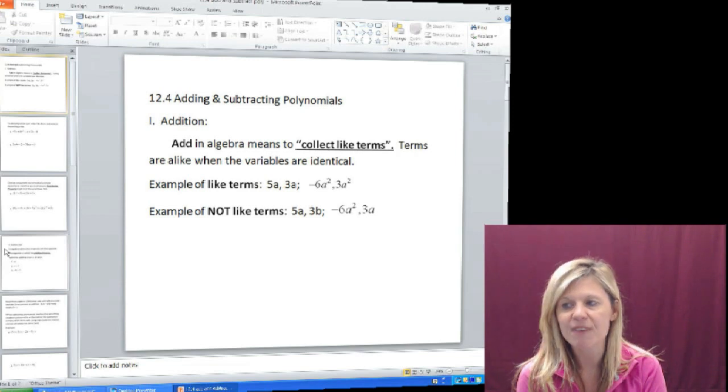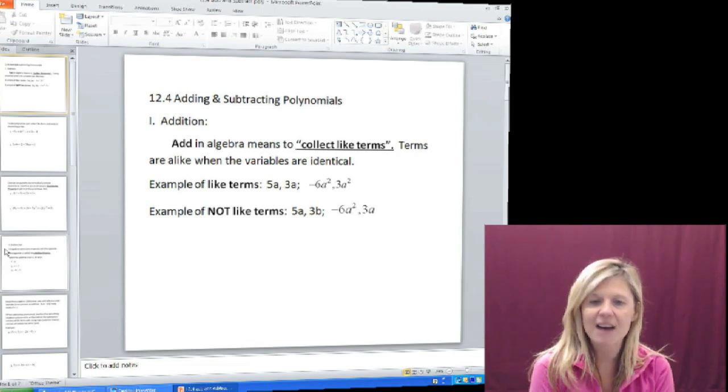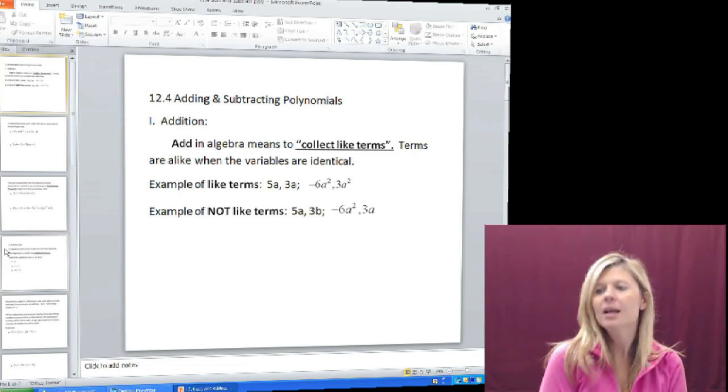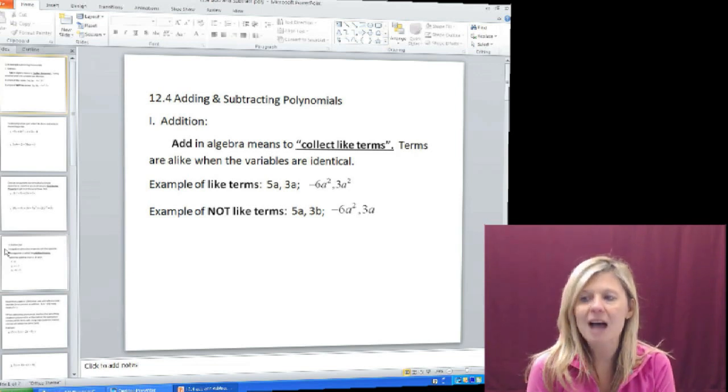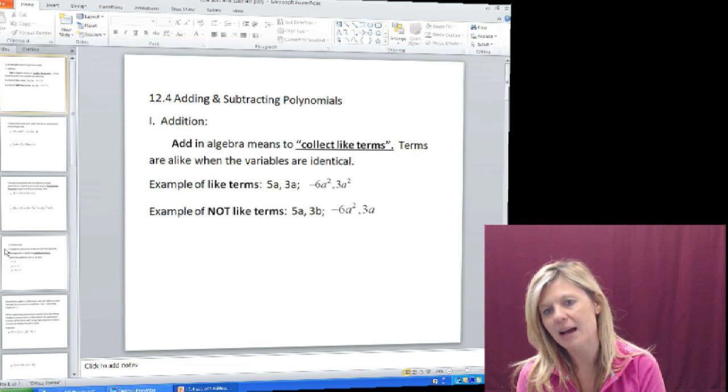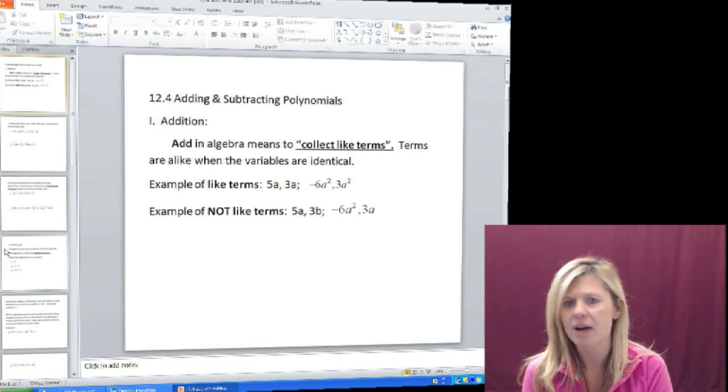So an example of like terms is 5a and 3a, and think about it in real life. That's like five apples plus three apples. We could put those together. Terms that are not alike would have different variables, such as 5a and 3b. That would be five apples and three bananas, and you couldn't put that together. They're not alike.